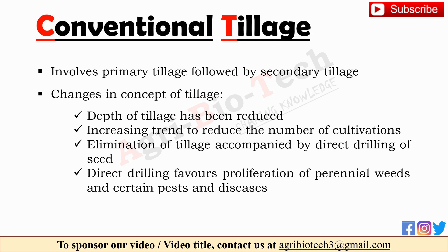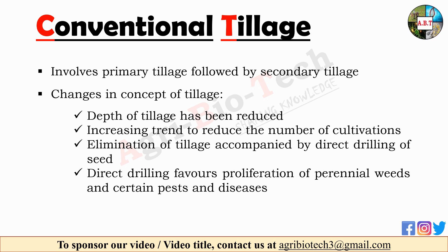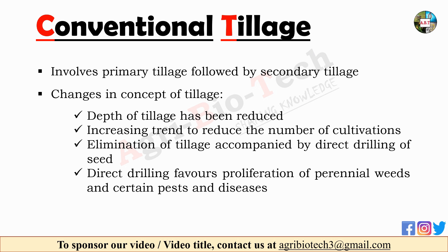Conventional tillage involves primary tillage to break, open and turn the soil, followed by secondary tillage to obtain the seedbed for sowing or planting. Due to various reasons, the concept of tillage has undergone radical changes. The depth of tillage has been reduced, and cultivators have replaced the plow as primary tillage implements, particularly on heavy soil. There has been an increasing trend to reduce the number of cultivations to avoid undesirable results of over-cultivation. Reduction or elimination of tillage has been accompanied by direct drilling of seeds. The main disadvantage is that direct drilling favors the proliferation of perennial weeds and certain pests and diseases.